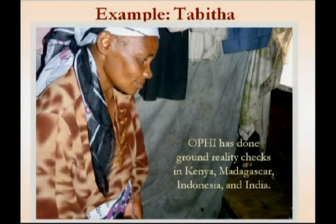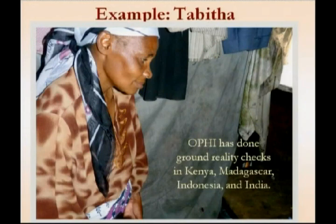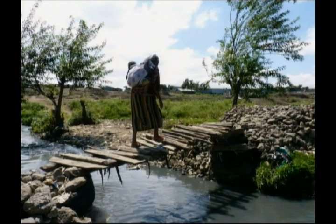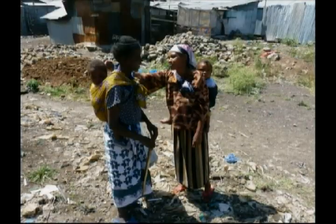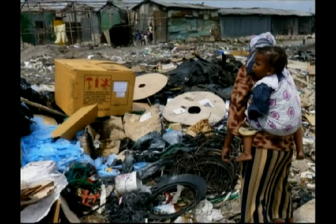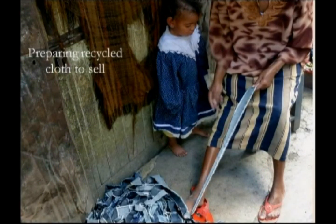We also wanted to look at whether the statistical results had validity in communities, and so conducted — as these things are, a few anecdotal and non-representative but very important — qualitative studies in different countries, looking at people who were MPI poor, how they were judged in terms of national poverty measures, and learning how to improve the MPI. This is Tabitha in the Lunga Lunga slum in Nairobi, in Kampur. She is a washer person, earned 66 cents for a wash, and when she does not have work, she would find materials such as cloth, de-thread them, and sell the thread for between 13 to 65 cents depending on the kilos she can produce in a day.